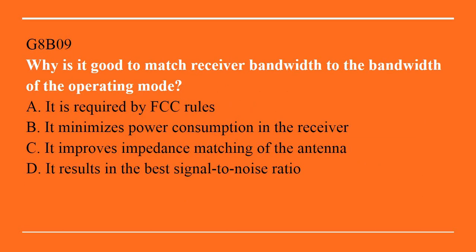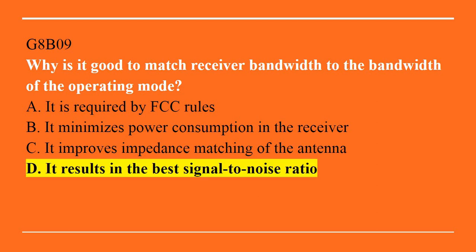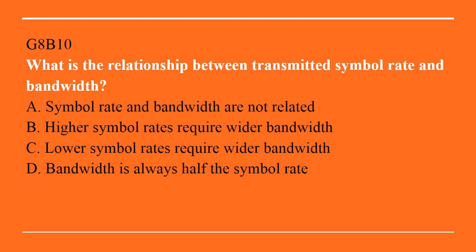G8B09: Why is it good to match receiver bandwidth to the bandwidth of the operating mode? A. It is required by FCC rules. B. It minimizes power consumption in the receiver. C. It improves impedance matching of the antenna. D. It results in the best signal-to-noise ratio. Answer is D. It results in the best signal-to-noise ratio.